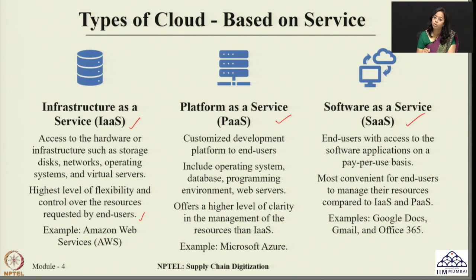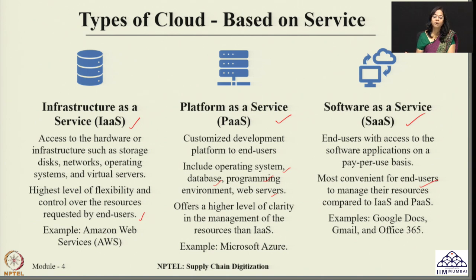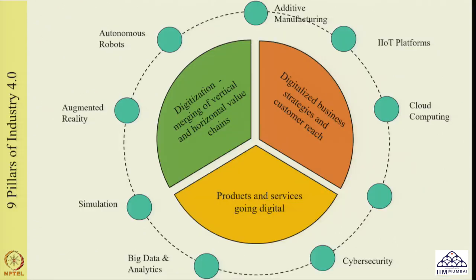The second service-based type is PaaS - Platform as a Service. Here customized development of a platform is done for end users. It can include operating system, database, programming environment, web servers, and so on. It offers a high level of clarity in the management of resources compared to IaaS. A simple example is Microsoft Azure. The last category is SaaS - Software as a Service. Here the end user gets access to software applications on a pay-per-use basis. It is the most convenient option for end users, particularly for managing their resources. Examples we use day in day out include Google Docs, Gmail, and Office 365.